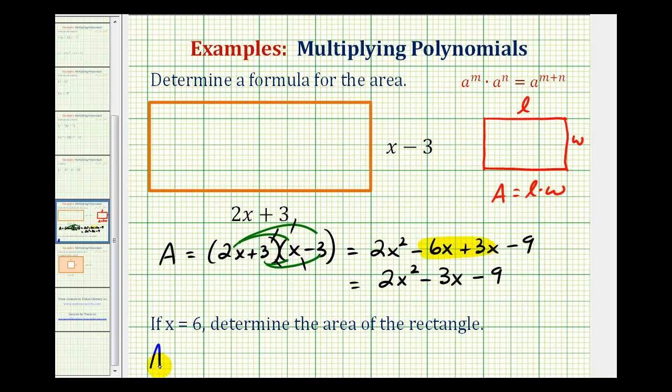If we use the expanded form, the area would be equal to 2 times 6 squared minus 3 times 6 minus 9. Well this would be 36, 2 times 36 is 72 minus 18 minus 9. That would be 45 square units.